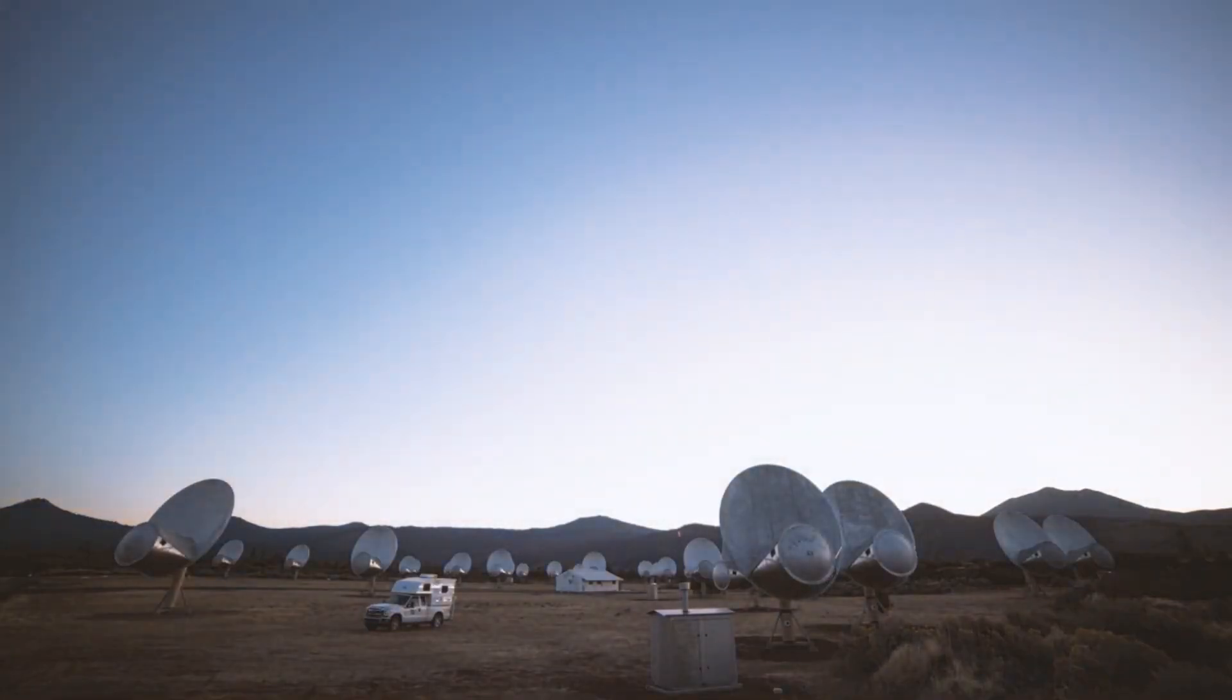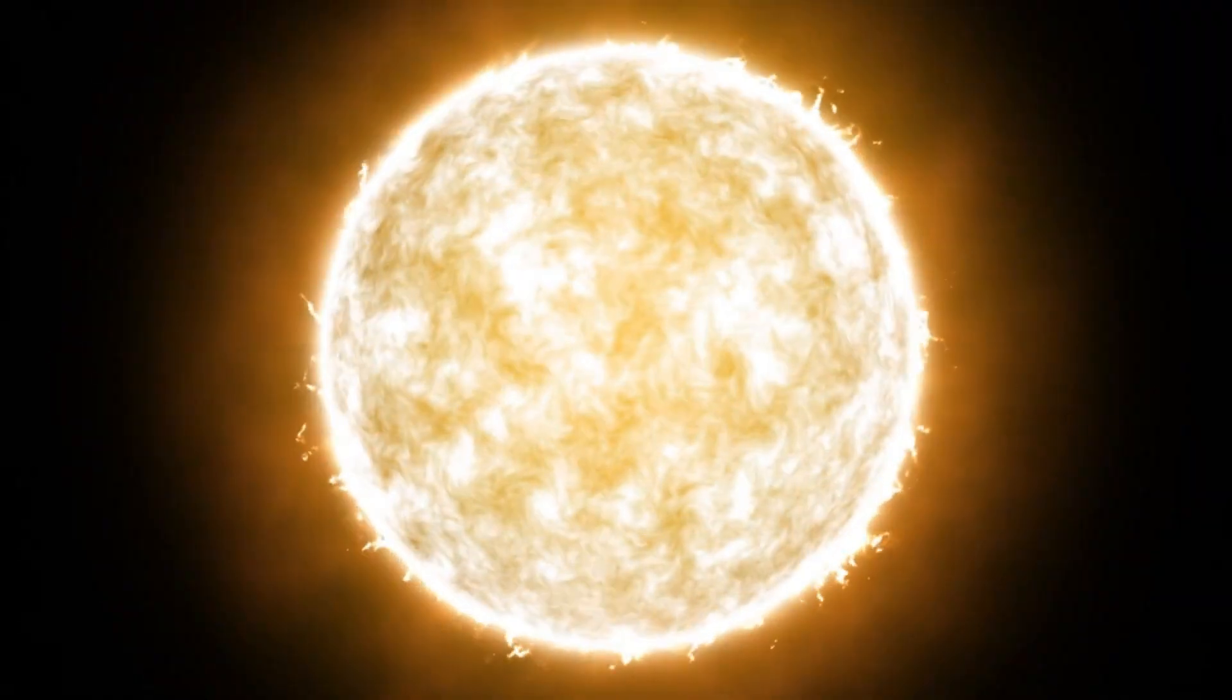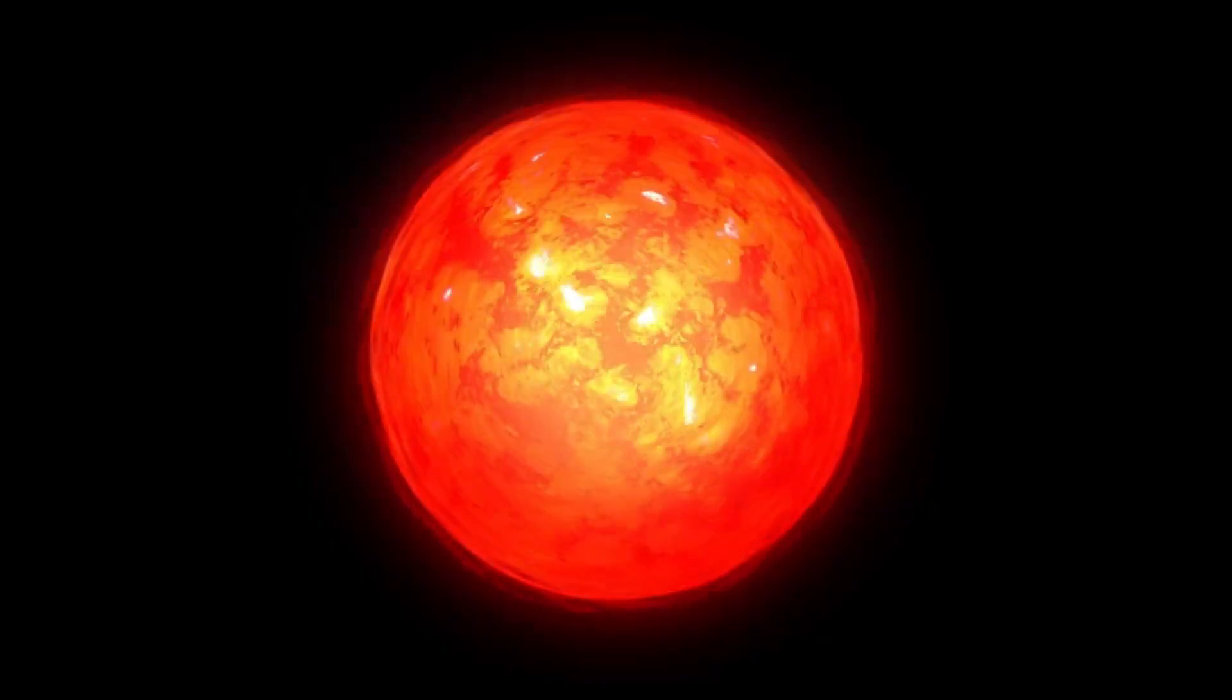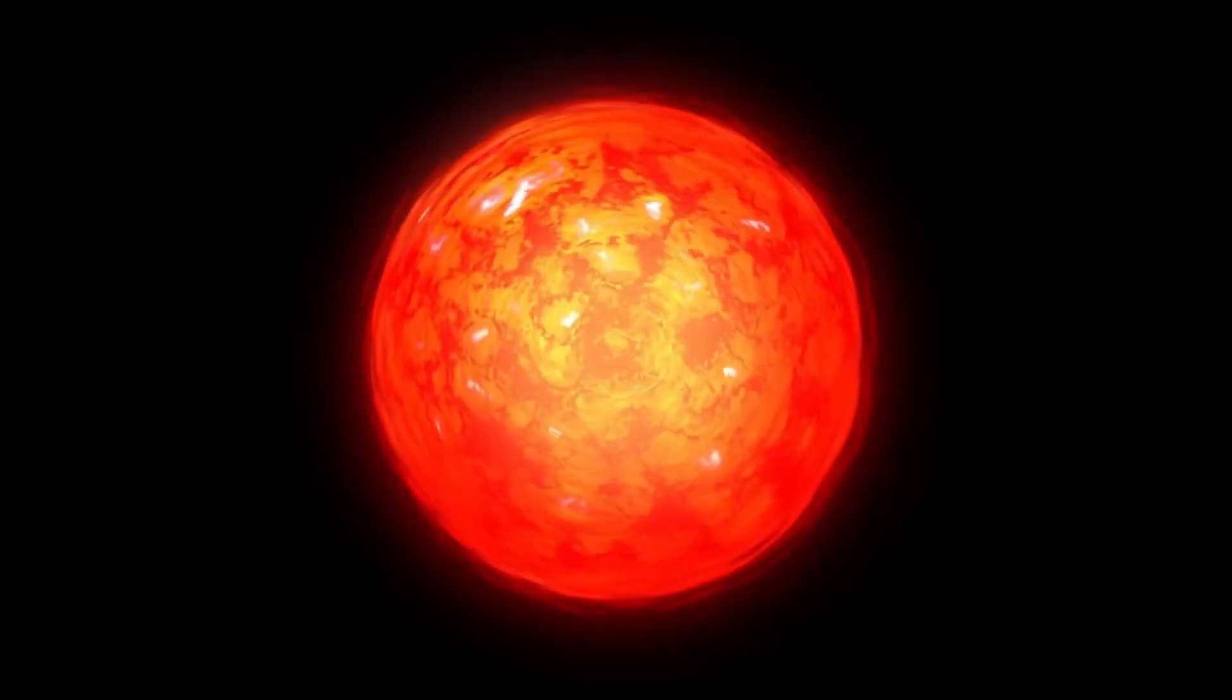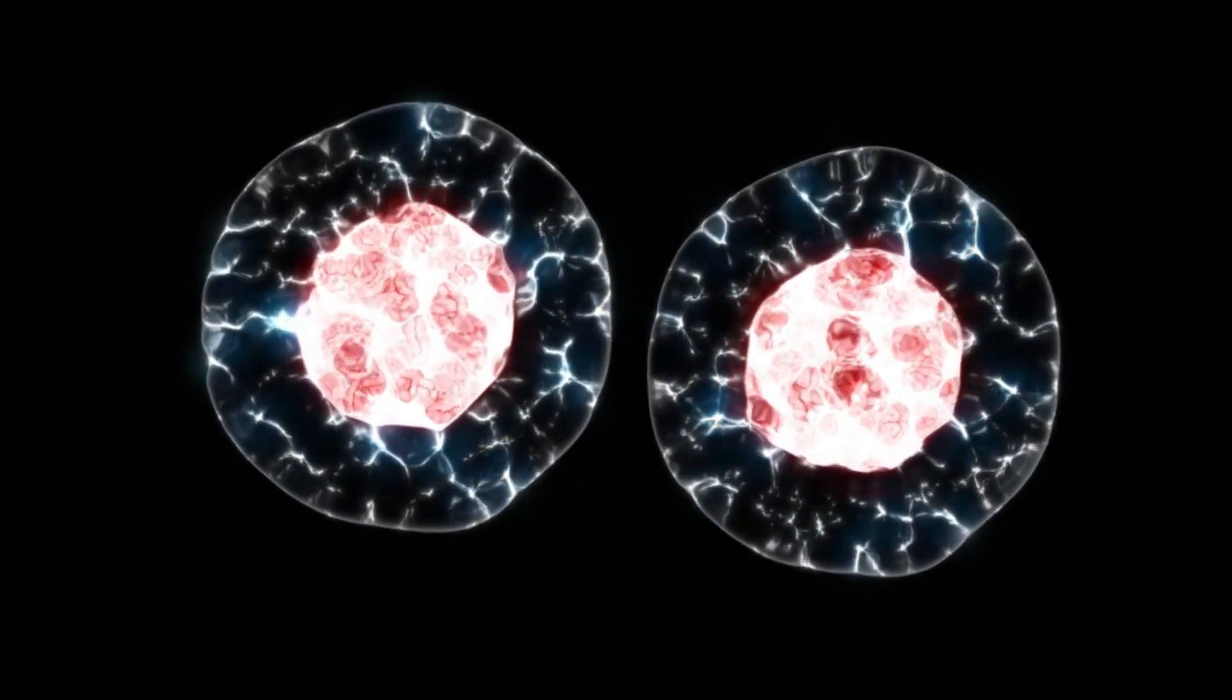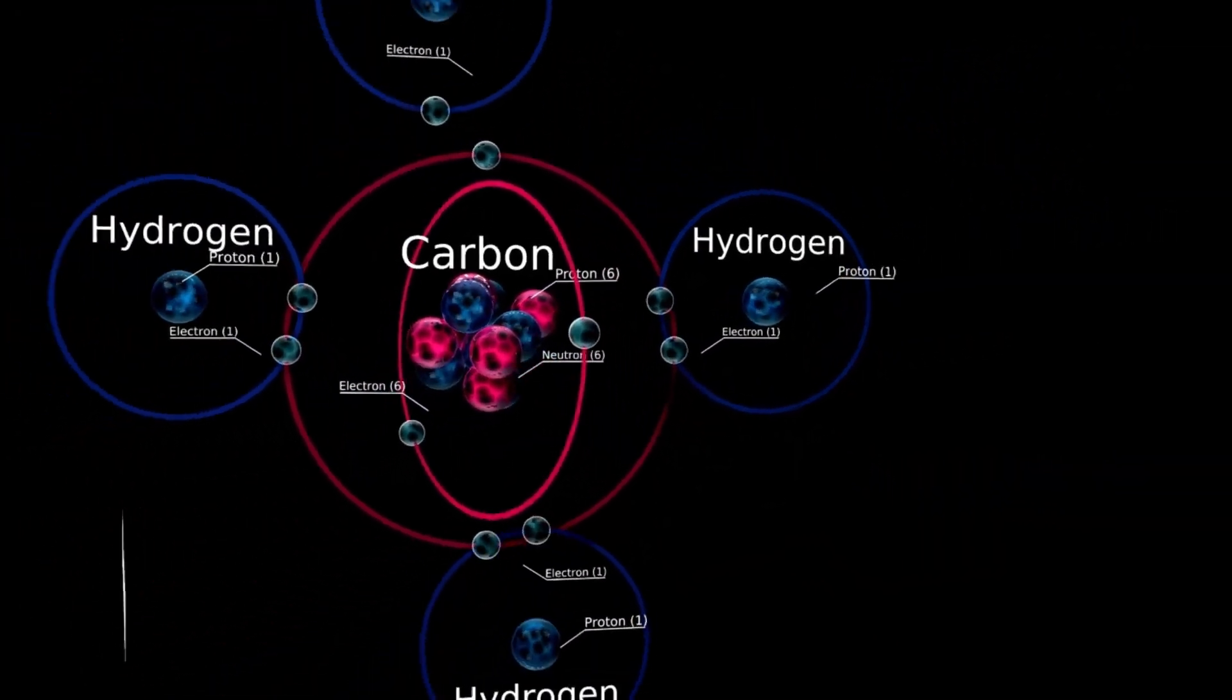This concept, known as the light travel time effect, is fundamental in astronomy and applies to all celestial objects beyond our solar system. Because of this significant time lag, any sudden changes in Betelgeuse's brightness that we observe today actually occurred in the past. If the star were to undergo a major transformation such as a supernova explosion, we would only become aware of it centuries after it had already happened. This creates a unique challenge for astronomers attempting to study Betelgeuse's current state. Unlike events on Earth, where real-time observations allow for immediate responses, studying distant stars requires interpreting historical data while making educated predictions about their present and future behavior.